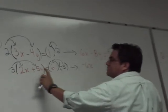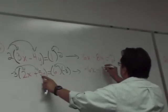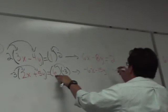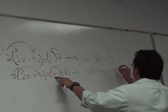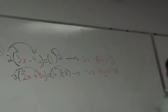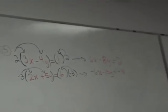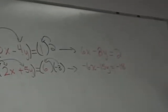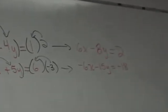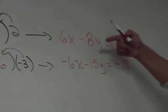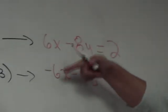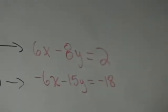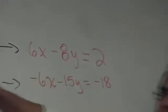Negative 3 times 5y is negative 15y. And negative 3 times 6 is negative 18. Now you have two equations that are equivalent to the original equations, but they have one advantage: the x's will cancel each other when you add.